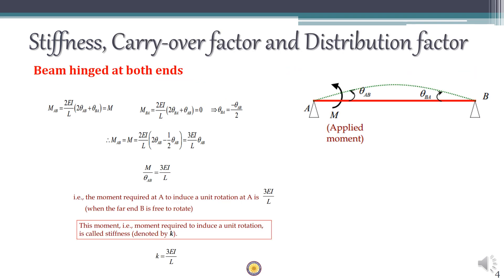Now let's look at carry-over factor and distribution factor. Consider a beam AB hinged at both ends. At end A you apply a moment M, so M_AB equals M. This induces a rotation theta_AB at A, and also a rotation theta_BA at B, as evident from the deflected shape.